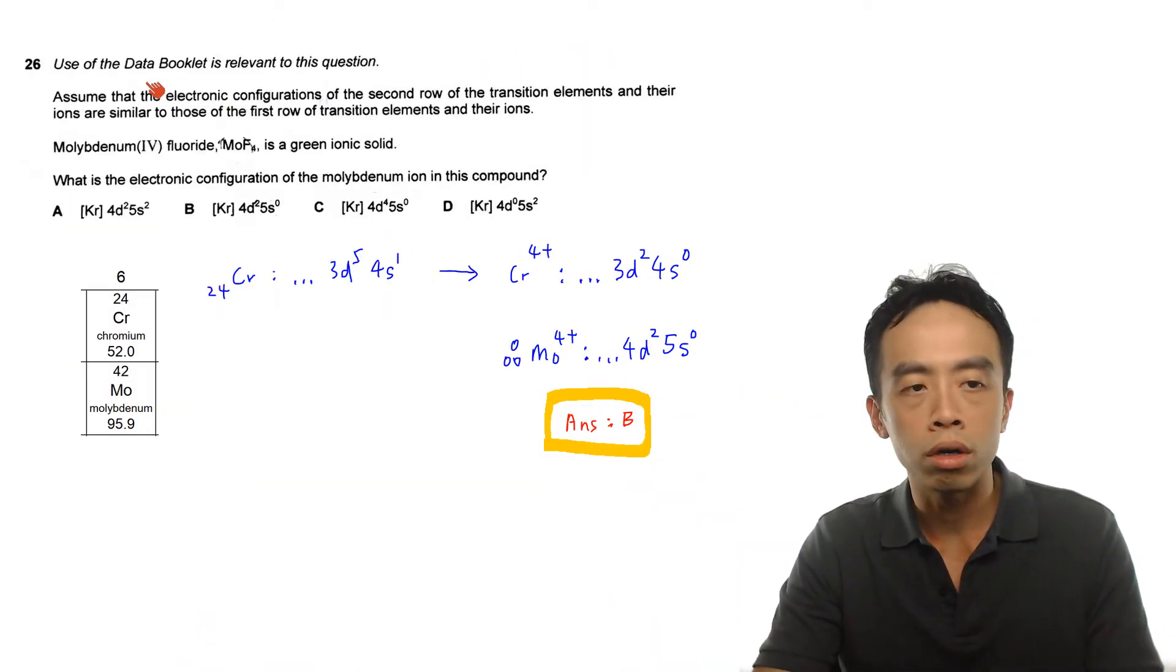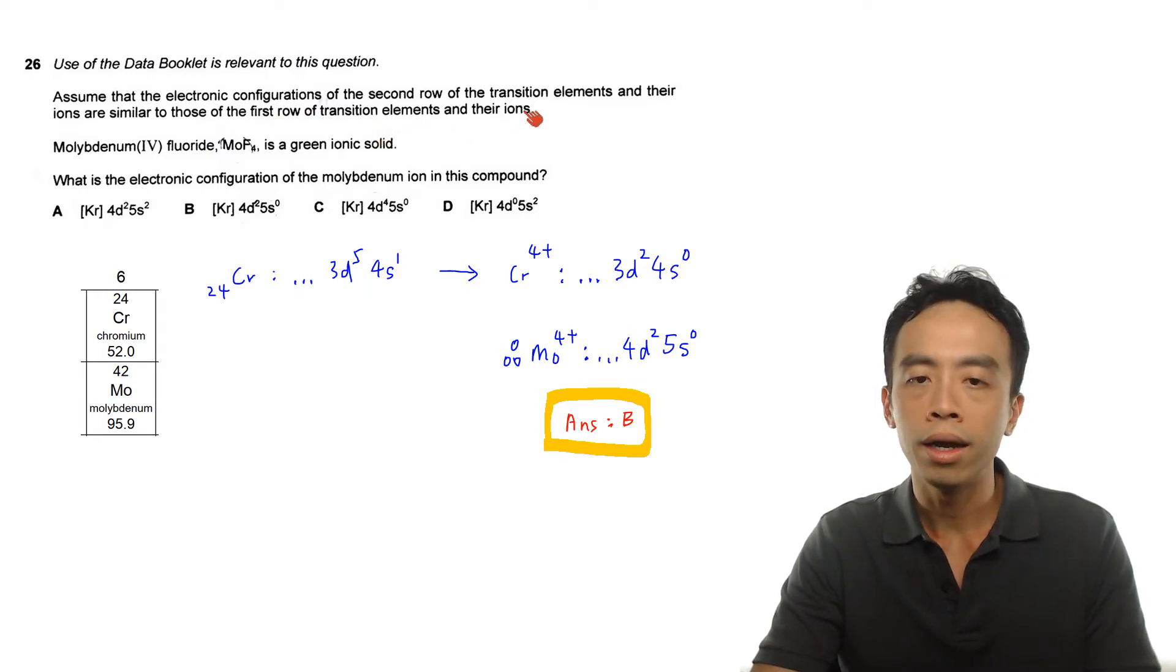Alright, question 26: use of the data booklet is relevant to this question. Assume that the electronic configurations of the second row of the transition elements and their ions are similar to those of the first row of transition elements and their ions.